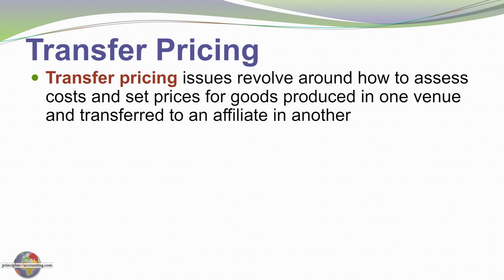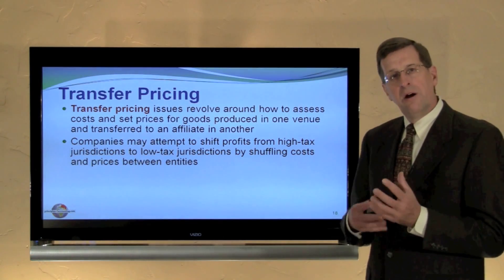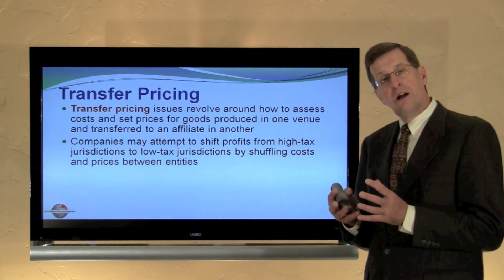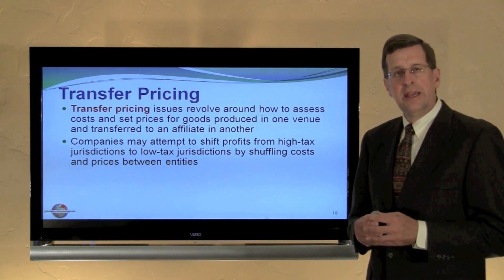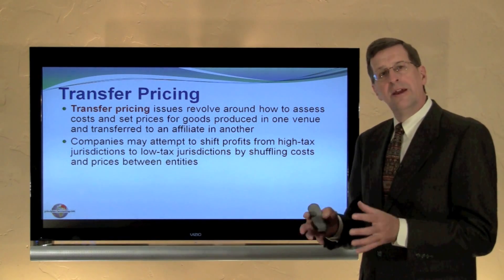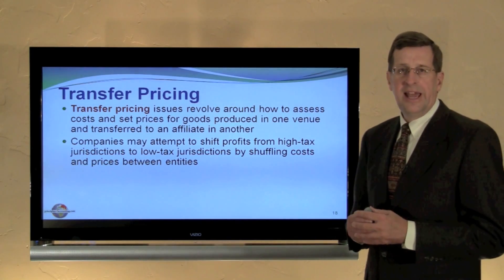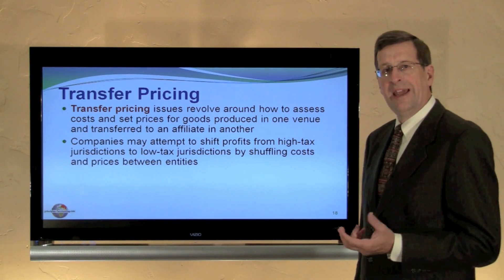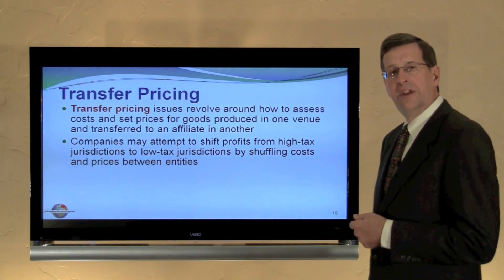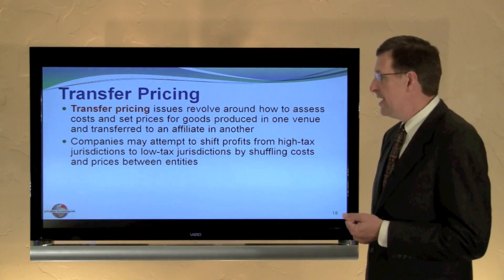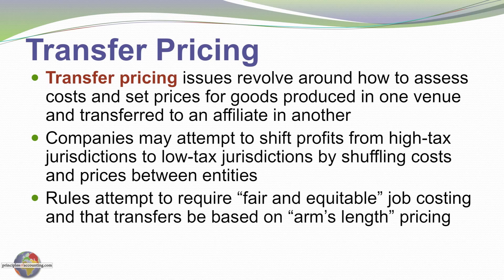I'd like to close this module by mentioning transfer pricing, which is very significant especially in a global business context. Transfer pricing issues revolve around how to assess costs and set prices for goods produced in one venue and transferred to an affiliated company in another. Measuring costs, determining job costs, and allocating overhead all feed into this. The cost level identified determines the profit earned by the producing affiliate and therefore the amount of tax they pay — creating incentives to shift profits toward low-tax venues. Rules require fair and equitable job costing and that transfers between entities be based on arms-length pricing.